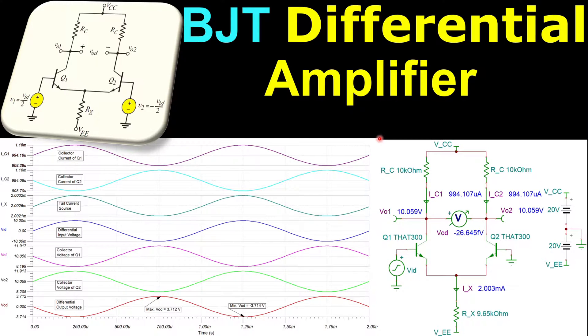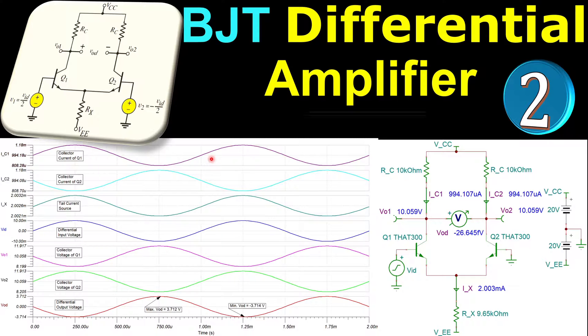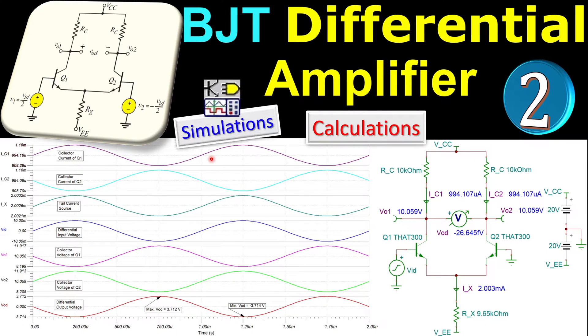Welcome to a new video about BJT differential amplifier circuits. This is our second example. In this example, we will look at a similar circuit as in the first example. Now we will replace the ideal current source with a resistor as shown here. We'll see that shortly, step by step in our calculation, and we'll verify these in SPICE simulations.